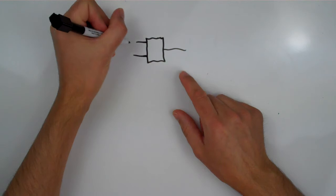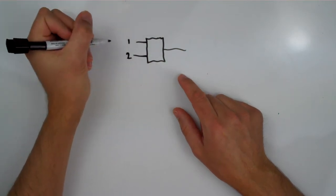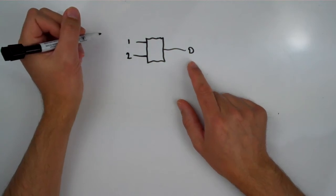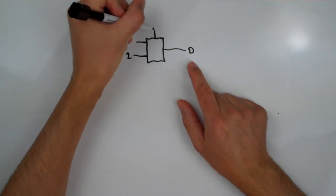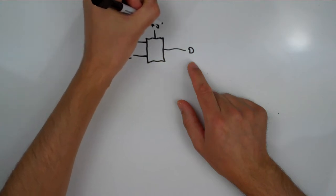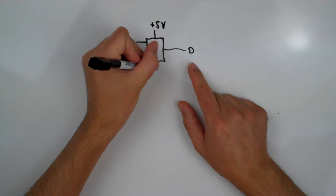Now, we can call these inputs number one, input number two, and we've got the output over here, and you would typically connect this to your positive five volts, let's say, and you would connect this to your ground.